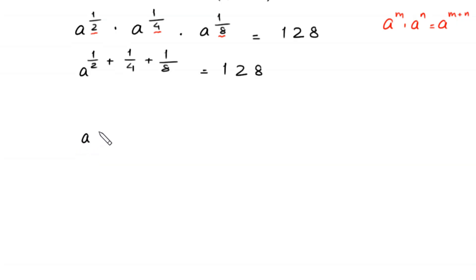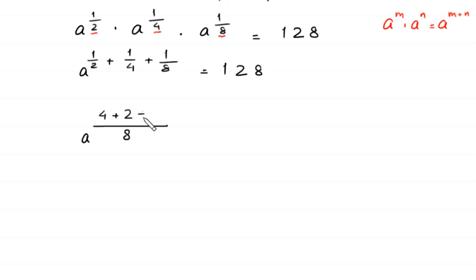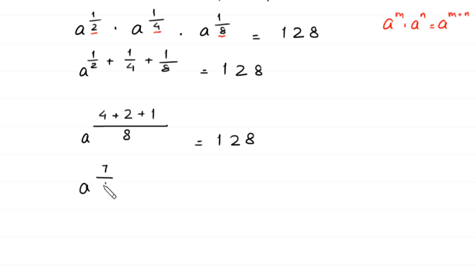The LCM of 2, 4, and 8 is 8. So we compute: 8 divided by 2 is 4, times 1 is 4; plus 8 divided by 4 is 2, times 1 is 2; plus 8 divided by 8 is 1, times 1 is 1. That gives us 4 plus 2 plus 1 equals 7, over 8. So a to the power 7/8 is equal to 128.